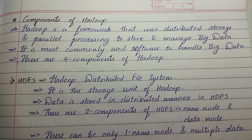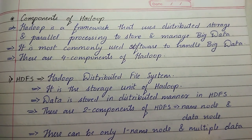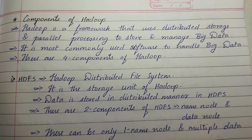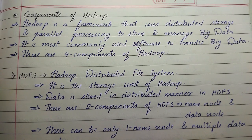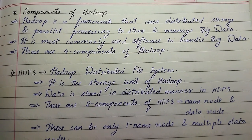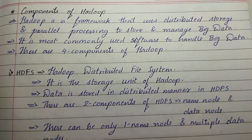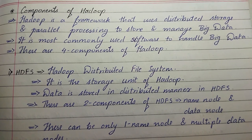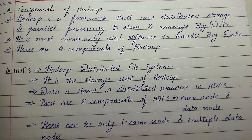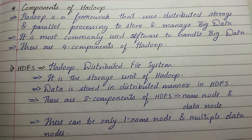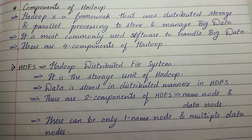Hello guys, welcome back to the channel. Today we are going to see the components of Hadoop. Hadoop is a framework that uses distributed storage and parallel processing to store and manage big data. It is the most commonly used software to handle big data, and there are four components of Hadoop.